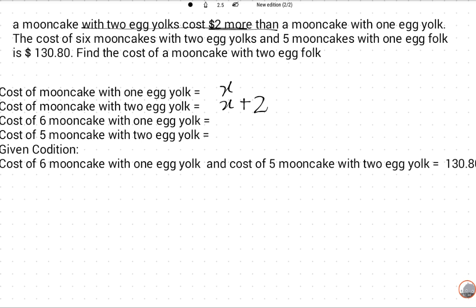Six mooncakes with one egg yolk will be 6X, because six is the quantity. Five mooncakes with two egg yolks is 5 times (X + 2).